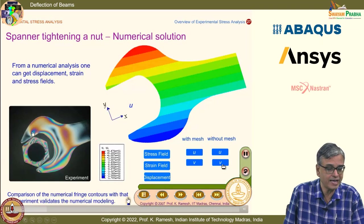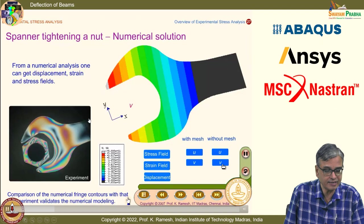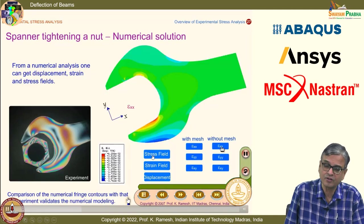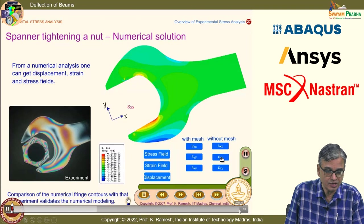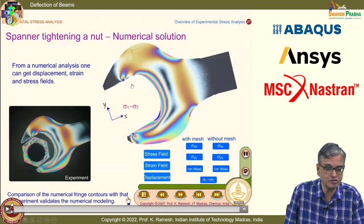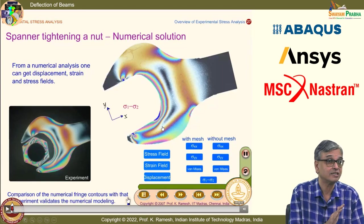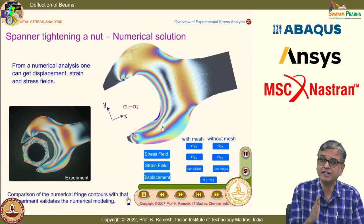With the finite element method, you can get displacement contours, strain contours, and stress contours. If you plot the stress contours in terms of σ_1 − σ_2, comparing with experiment — the match is very impressive. You can clearly say that the numerical analysis has brought out the results correctly.